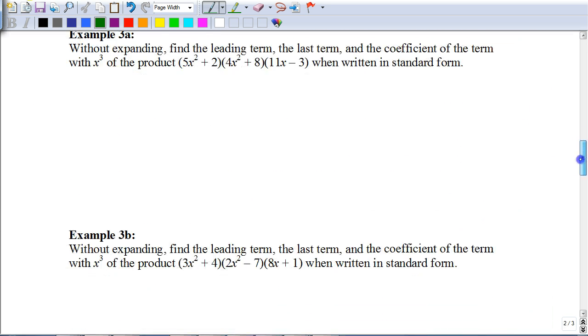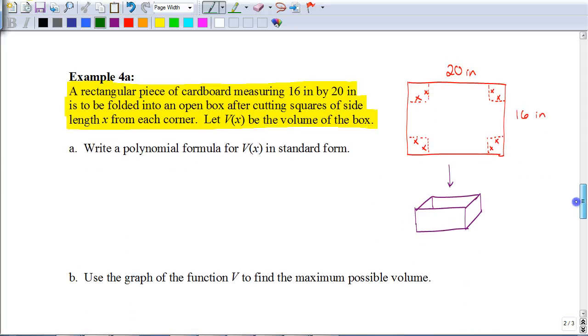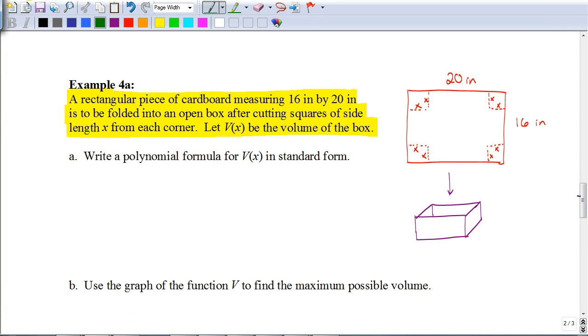I'm going to skip some of these other examples. We're going to move to this one here. It says, a rectangular piece of cardboard measuring 16 inches by 20 inches is to be folded into an open box after cutting squares of side length x from each corner. Let V(x) be the volume of the box. So, here's what we have. We have this original piece of cardboard that's 20 inches by 16 inches. And we're cutting out a square corner from each side. And so, those square corners, obviously, if they're square, they're going to have the same length on all four sides.